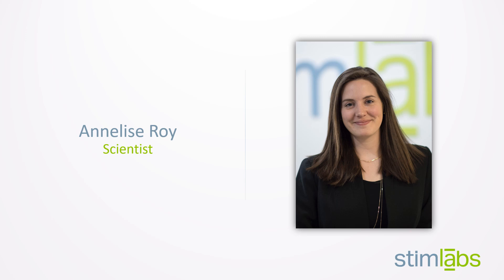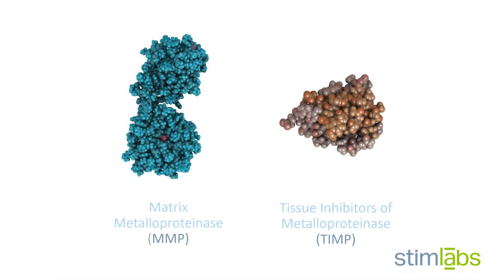Today, we're going to discuss MMPs and TIMPs. These are two protein types that are widely discussed in conversations around wound healing. MMPs are often portrayed as negative components that break down tissue matrix and prevent the healing process. TIMPs, which inactivate MMPs, are too often left out of the conversation. Today, I'm going to walk you through the roles of these proteins and debunk any of these misconceptions.